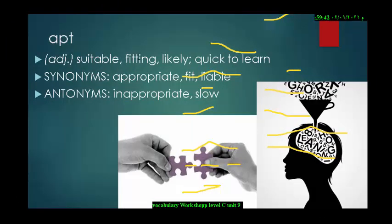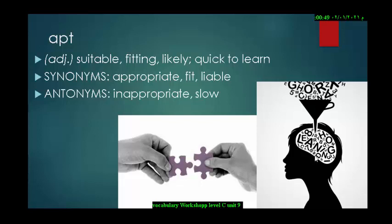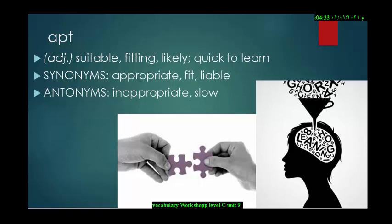Let's start explaining the words. Word number one is apt. Apt is an adjective which means suitable or fitting or likely or quick to learn. Its synonyms are appropriate or fit or liable. And the antonyms are inappropriate or slow. As you can see in these two pictures, the first picture here, these two pieces of jigsaw are apt, means they are suitable or they fit. And in the second picture, it looks like someone is thinking of something that he wants to learn. For example, math is apt, means it's quick to learn.